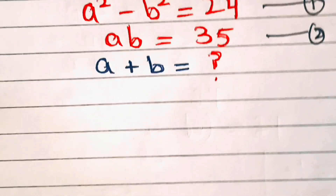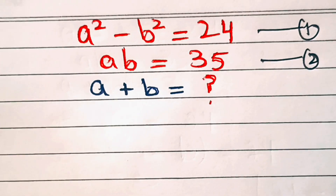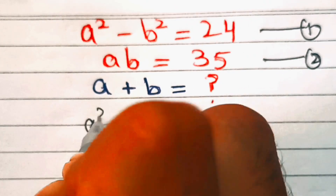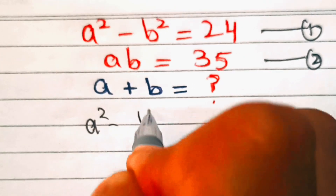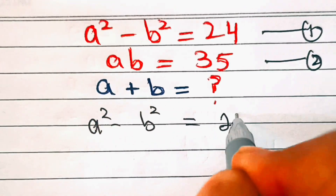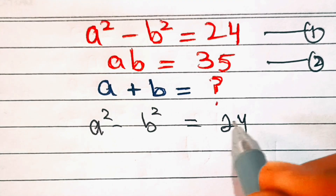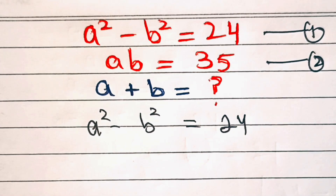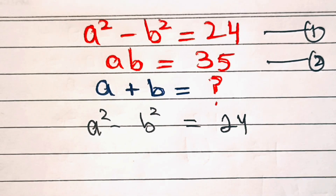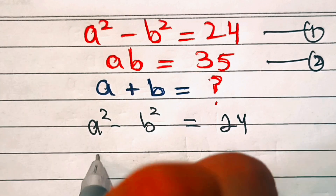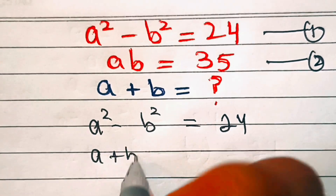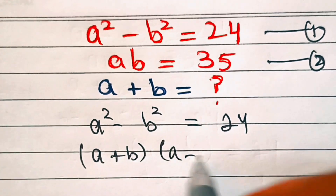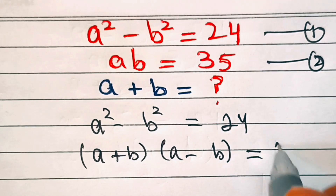So from the first equation, a squared minus b squared equals 24. From the left-hand side, we have a squared minus b squared, which is an algebraic identity equal to (a plus b)(a minus b) = 24.